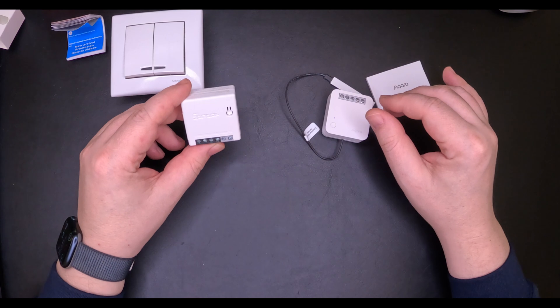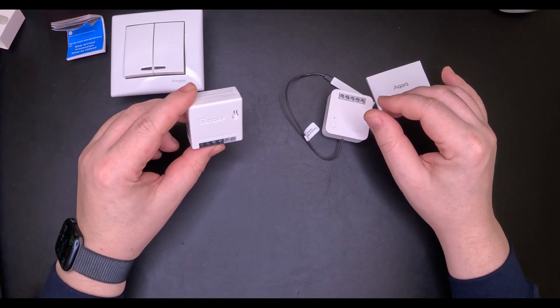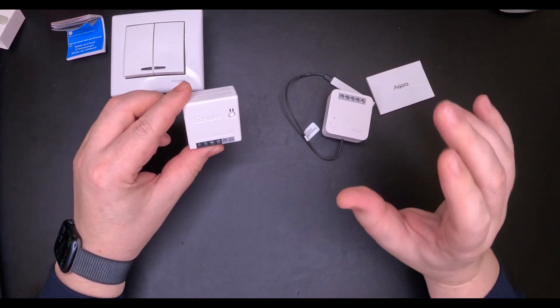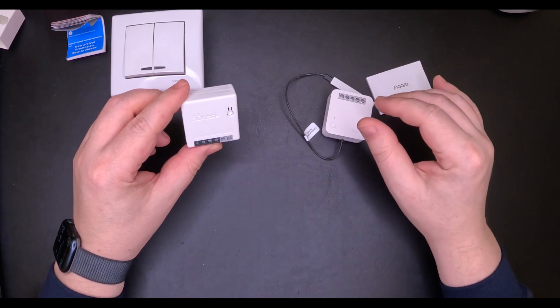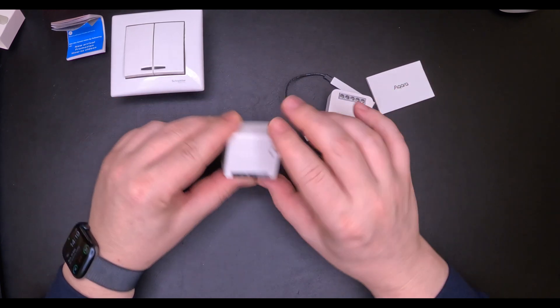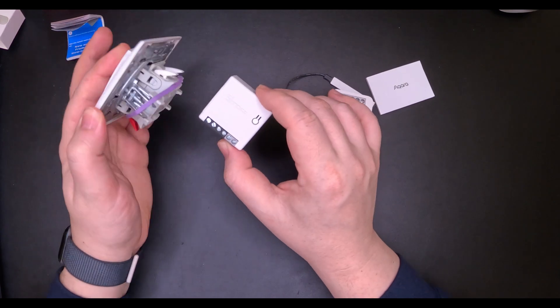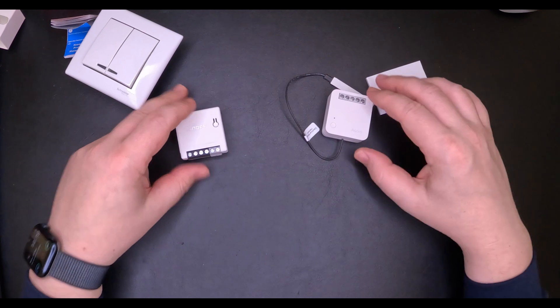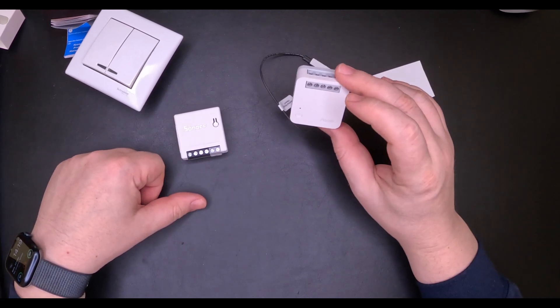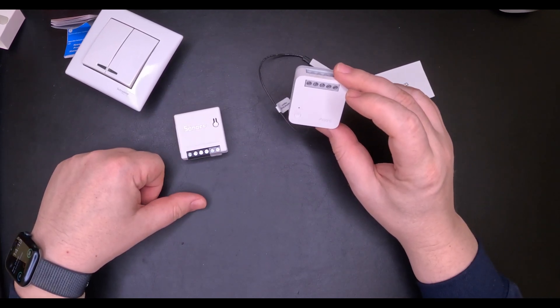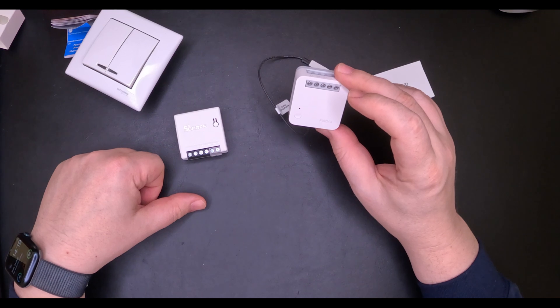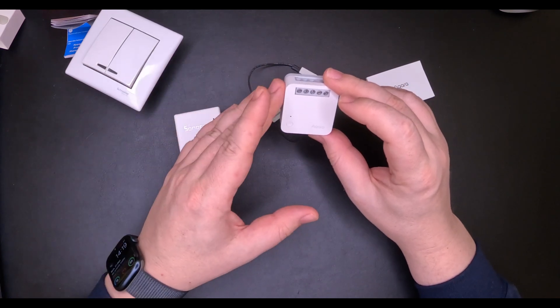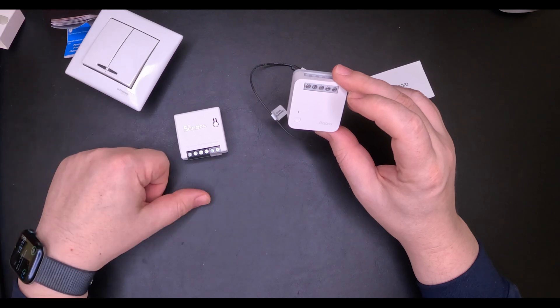I'm going to install the Sonoff ZB Mini inside the junction box in my house, just to extend the Zigbee network. I'm not going to use any external switch, so I'm not going to connect any external contact for this unit. It will simply work as a router. The Aquara T1 instead will be installed behind the power socket, and that way I can use the power meter function of it to monitor the power consumption of my office desk.